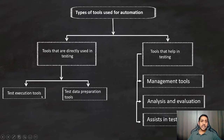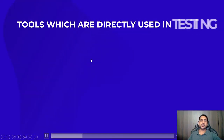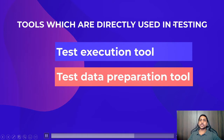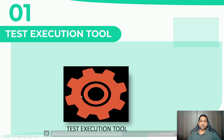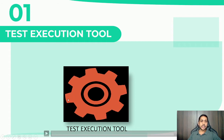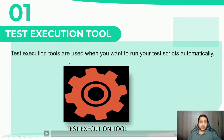Directly used tools are the test execution tool and test data preparation tool, whereas the supporting tools are the management tool, analysis and evaluation tool, and tools which assist in testing. Now let's look at each one. The first is the test execution tool, which is directly used in testing.